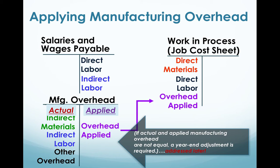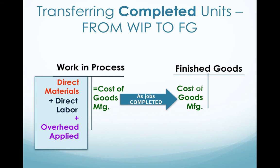As manufacturing overhead gets applied, the amount based on the predetermined overhead rate is a credit, which goes as a debit into the work in process account. As a job is completed, it goes from the work in process account — which included direct material, direct labor, plus the amount of manufacturing overhead applied based on the cost driver — and becomes a credit that moves over to finished goods.